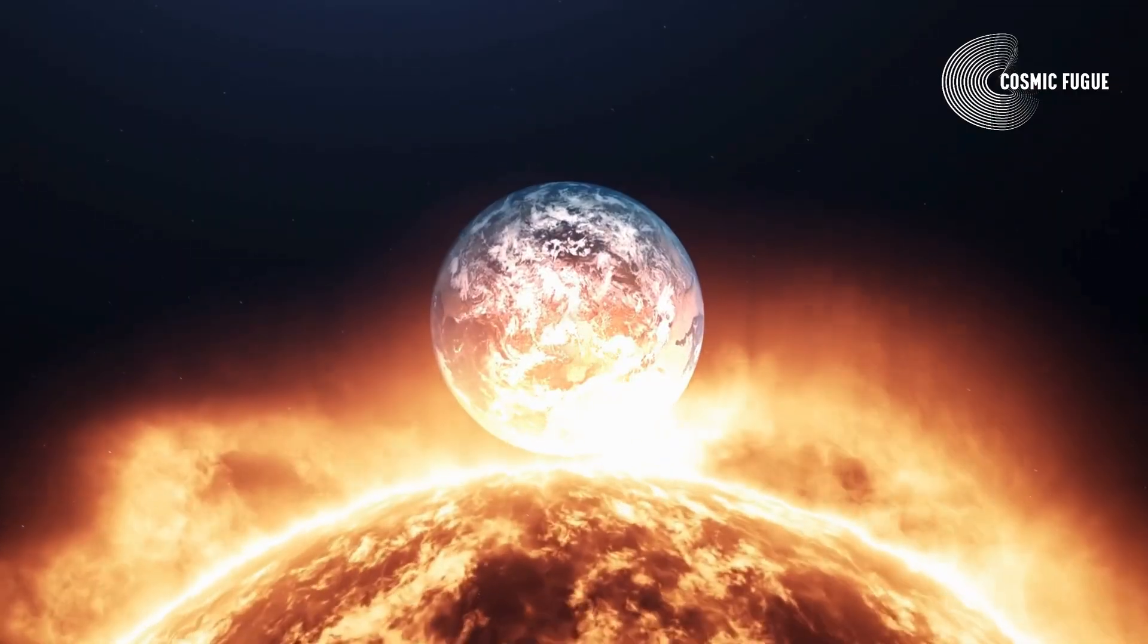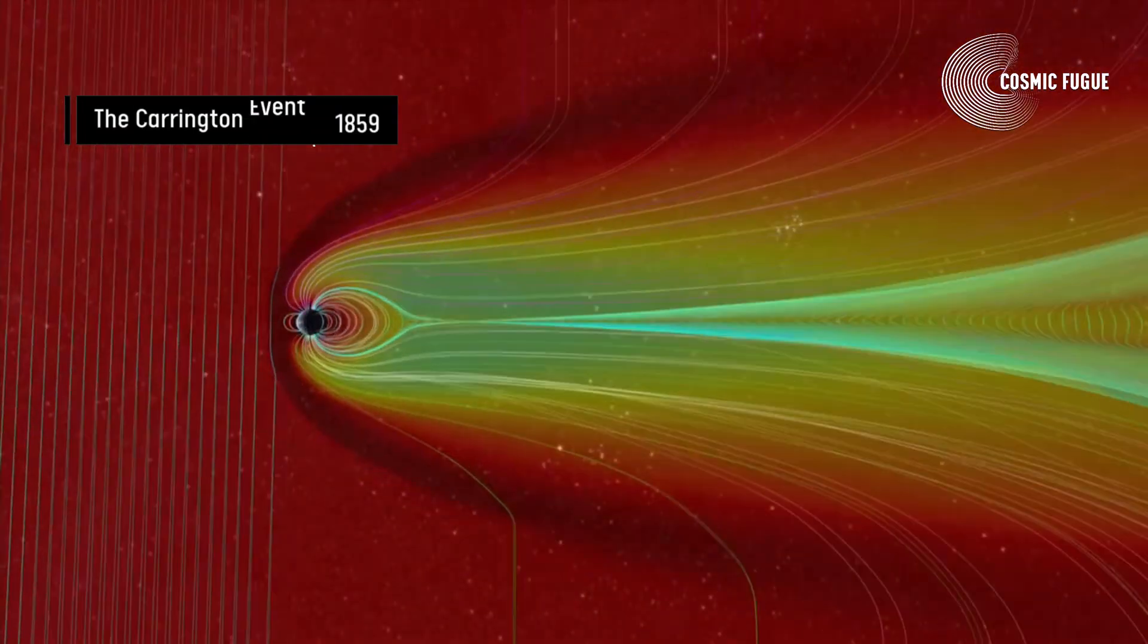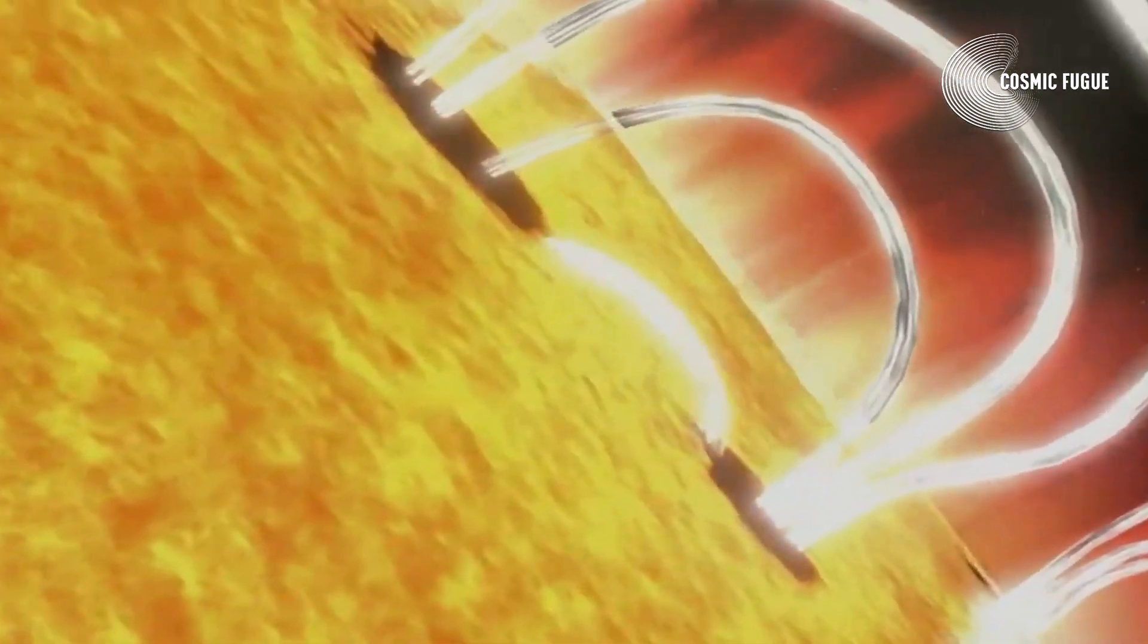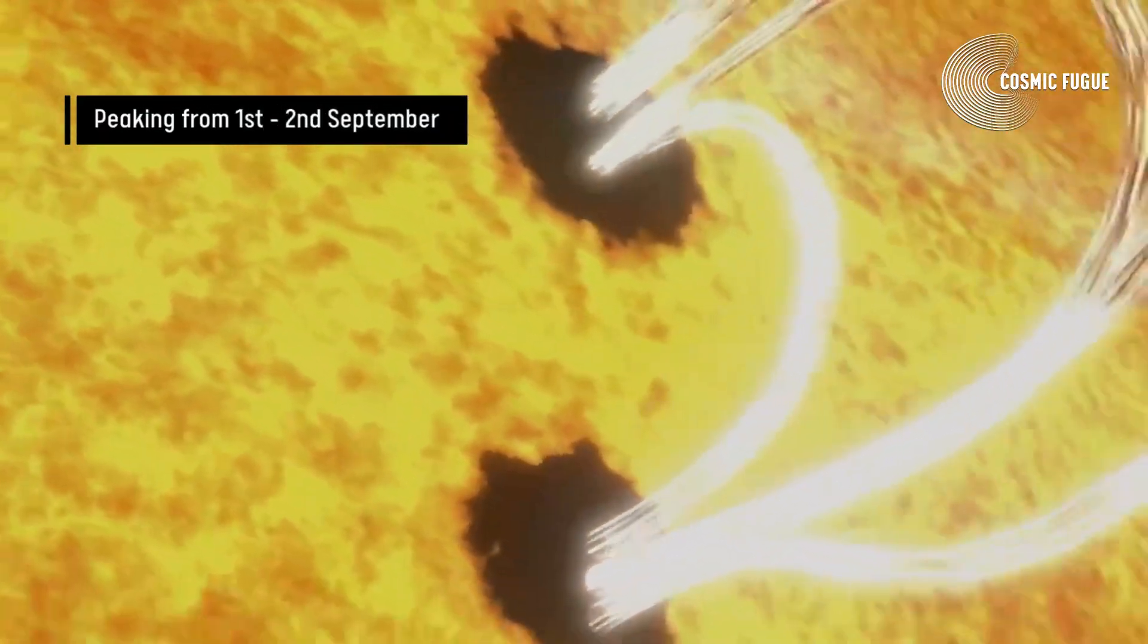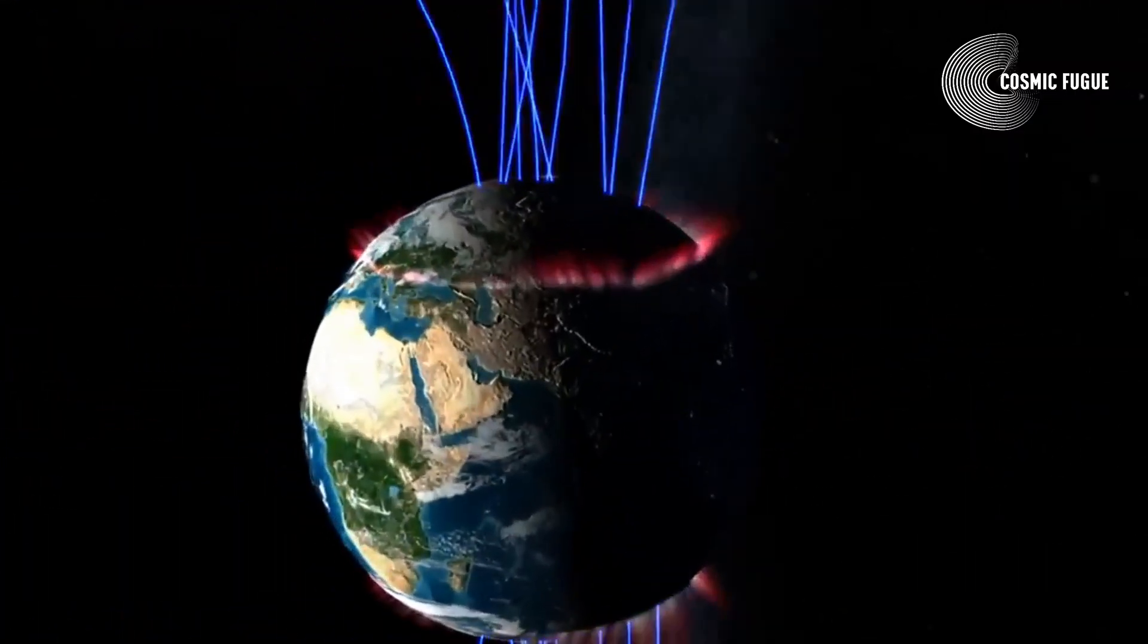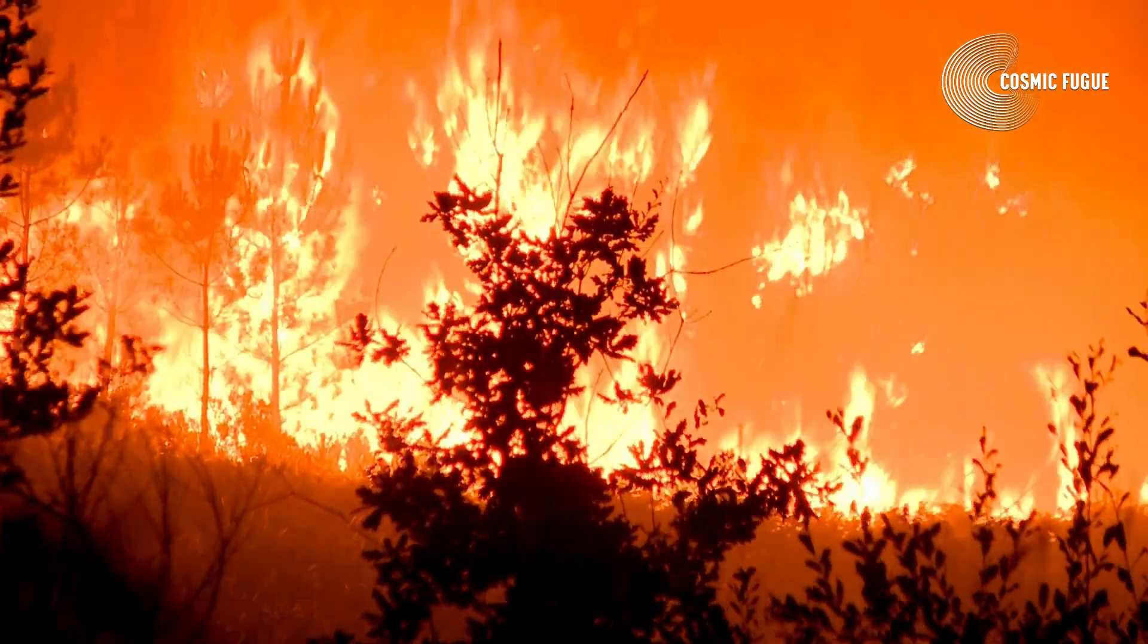Earth was once struck by one such event in 1859, popularly known as the Carrington Event. It was the most intense geomagnetic storm in recorded history, peaking from 1 to 2 September 1859 during Solar Cycle 10. It created strong auroral displays that were reported globally and caused sparking and even fires in multiple telegraph stations.